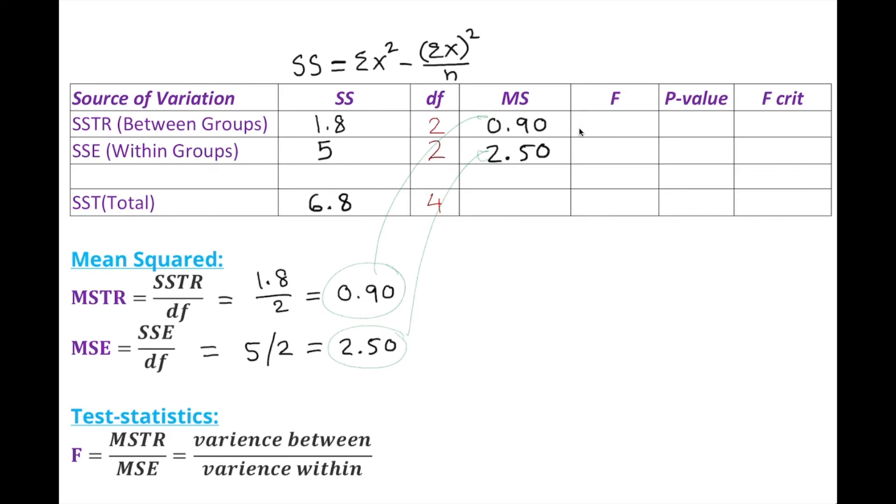Now the F test statistic. We look into variance between and variance within. We take the ratio between them—these two. So 0.90 over 2.50 gives us 0.36. Our F test statistic is 0.36.